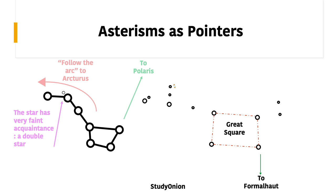The star I just pointed out has a very faint companion — a double star — and you've got to be careful about that when drawing your diagrams of the Plough. The second asterism used as a pointer is the Great Square of Pegasus. If you follow downwards from the bottom right corner of the Great Square of Pegasus, you will be able to find Fomalhaut.